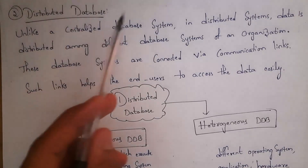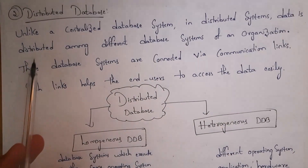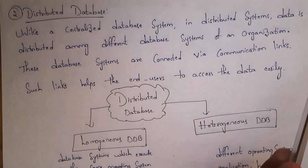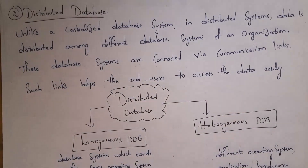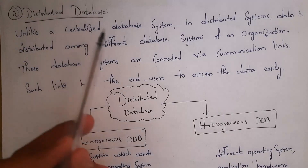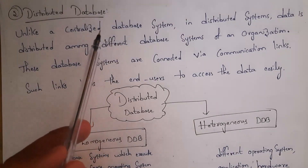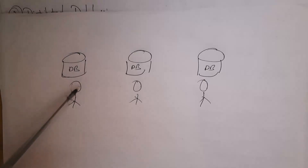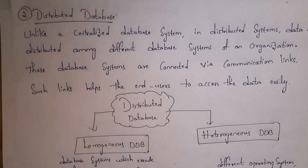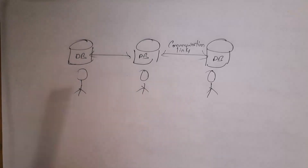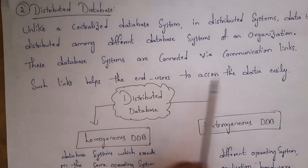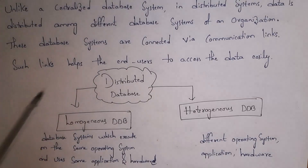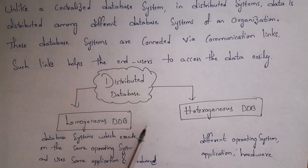Unlike a centralized database system, in a distributed database system data is distributed among different database systems of an organization. These database systems are connected by communication links, which help end users access data easily. In a centralized system there is only one single database, whereas in a distributed database each employee has their own database and all databases are connected via communication links.